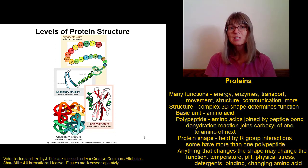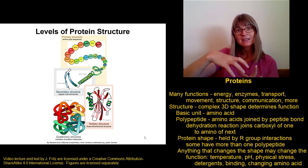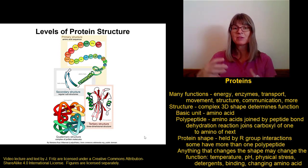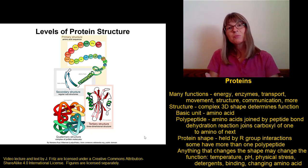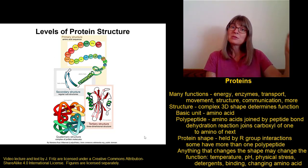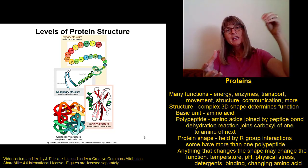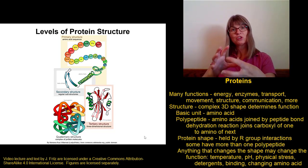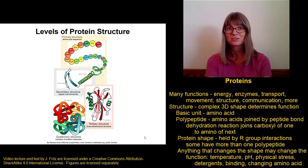Protein shape and therefore protein function can also be changed when something binds to a protein. There are a lot of proteins that start in an inactive form, and then when something binds to them — maybe a calcium ion — it causes a shift in shape and now the protein is more active. Or there might be something that binds to a protein to turn off its activity: the protein is functional, something binds, the protein changes shape, and then it stops working. That's a really important mechanism of regulation of protein activity inside your cells.